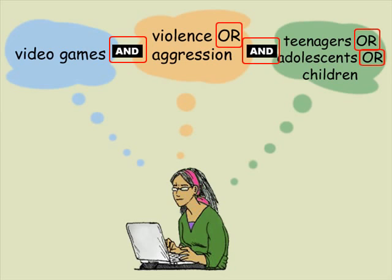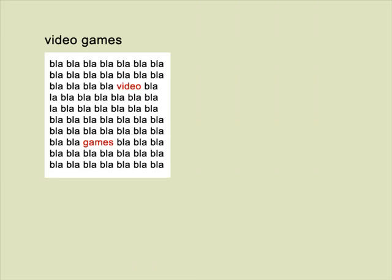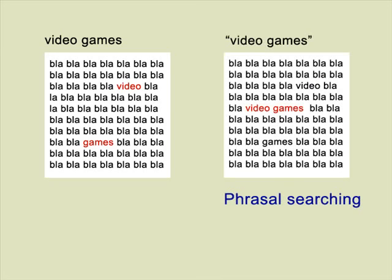Now I will explain two techniques that you can use in most databases to ensure that you'll be retrieving all of the relevant documents for your topic. The first is called phrasal searching. When one of your terms consists of more than one word, you want to make sure that the search engine of the database finds your exact term and not each separate word in different locations.